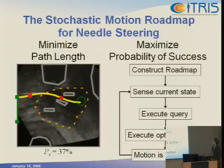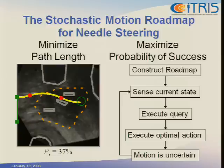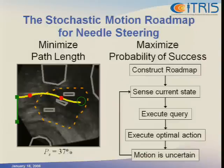Our approach is to first do pre-computation where we construct a roadmap-type data structure, which speeds up the method. We can then use imaging techniques to sense the current state and execute a query asking what we should do at our particular state. We then execute that optimal action — something very simple and local, for example, insert the needle half a centimeter with bevel right. There's an expected path the needle would follow given that action, but because motion is uncertain, we'll end up at some new point, and then we continue the loop.